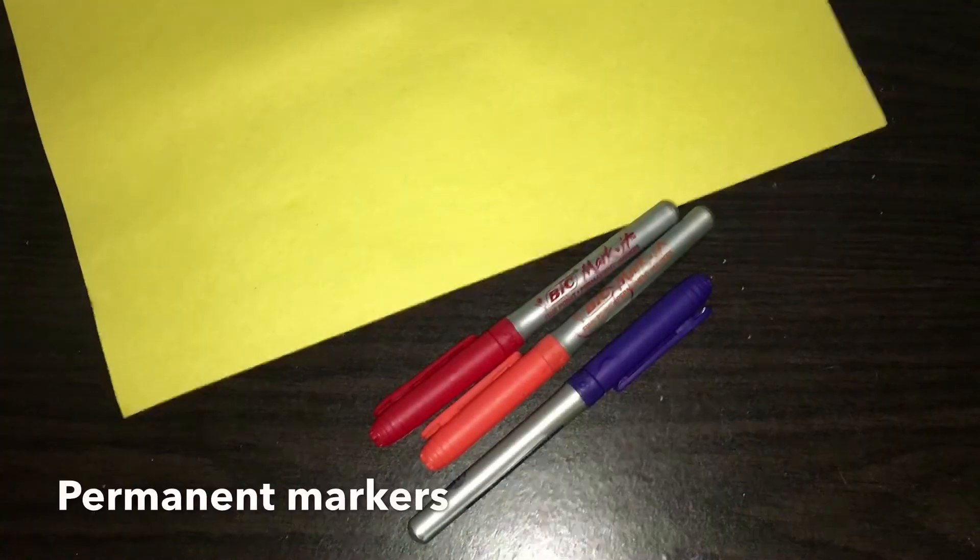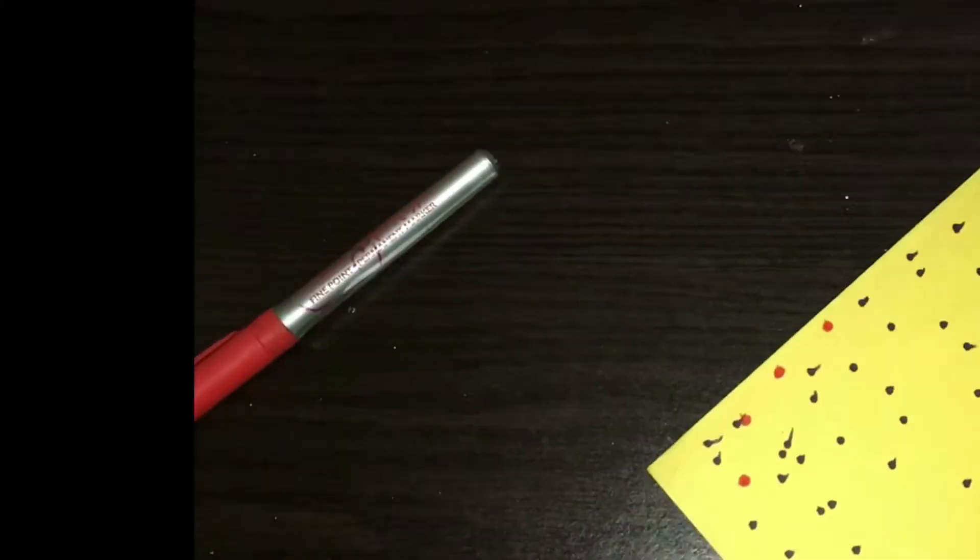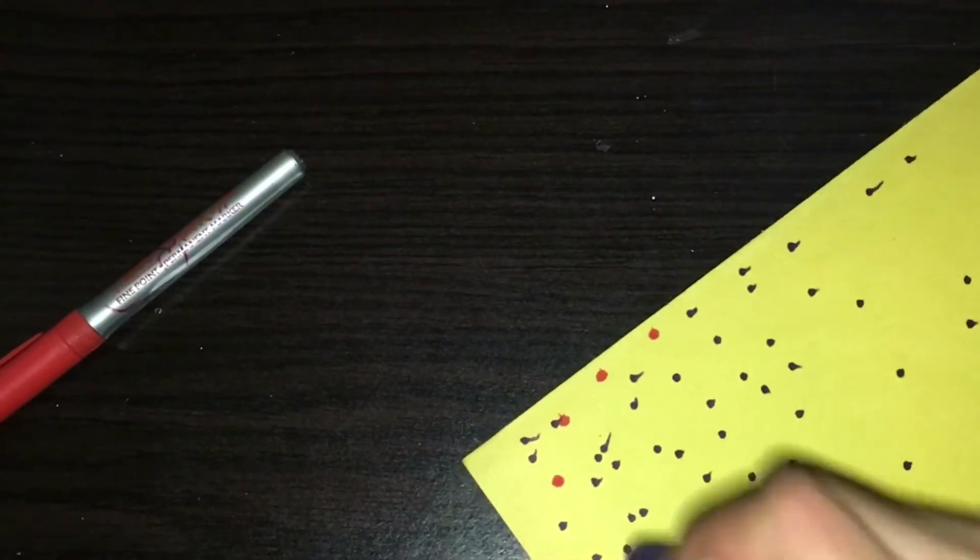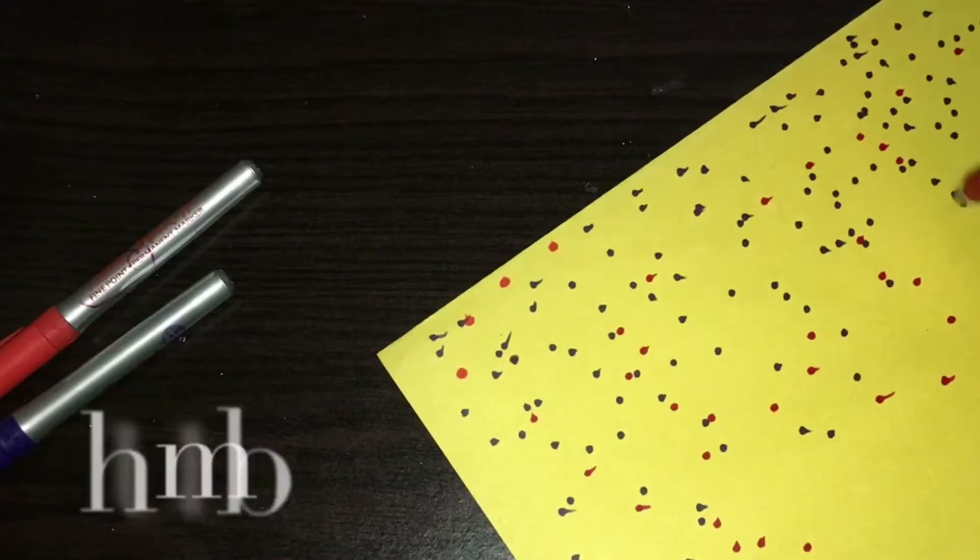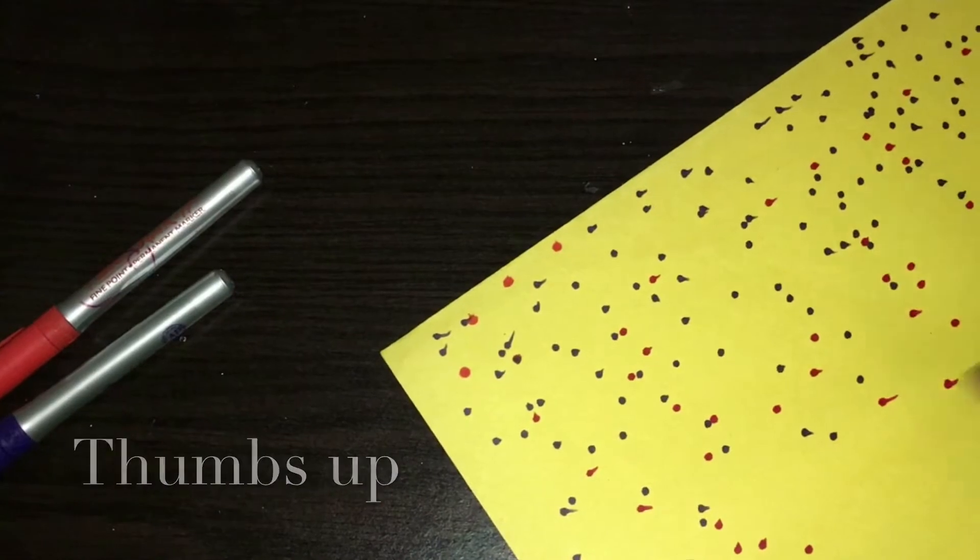For the first thing, you'll need any kind of paper and some permanent markers of your choice. This is a really simple thing. You just need to get your marker and just dab and press the marker to your paper. Get colorful markers, a variety of markers, and just press them into the paper.